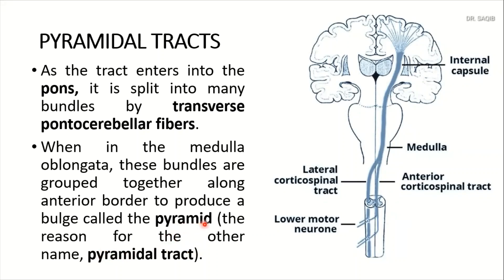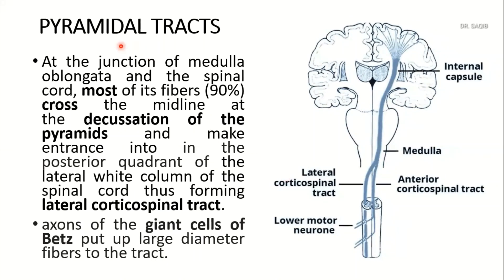This is the motor decussation. At the junction of the medulla oblongata and the spinal cord, 90% of the fibers cross the midline at the decussation of the pyramids and enter the posterior quadrant of the lateral white column of the spinal cord, thus forming the lateral corticospinal tract. The axons of the giant Betz cells give the large diameter to the fibers of that tract.